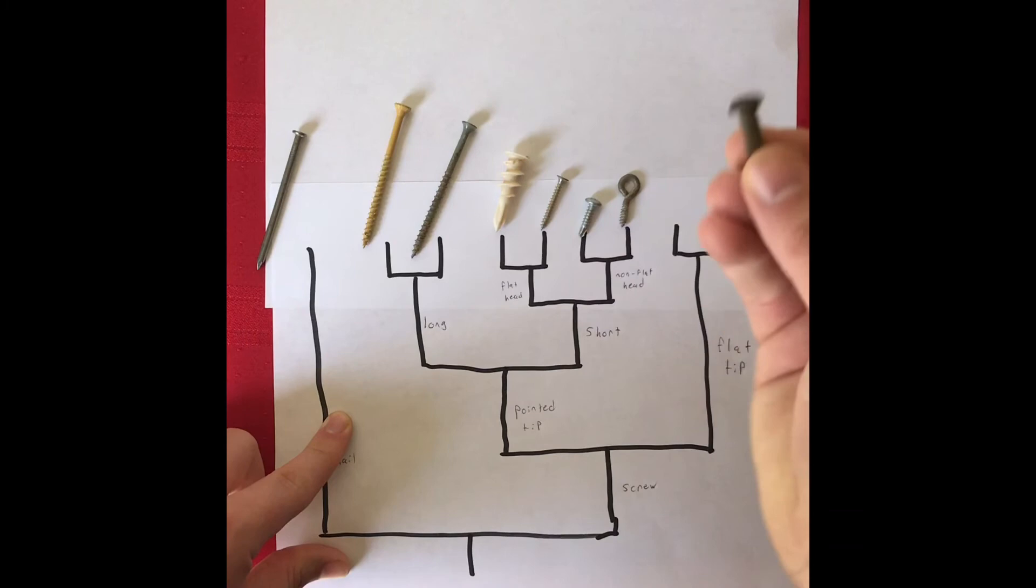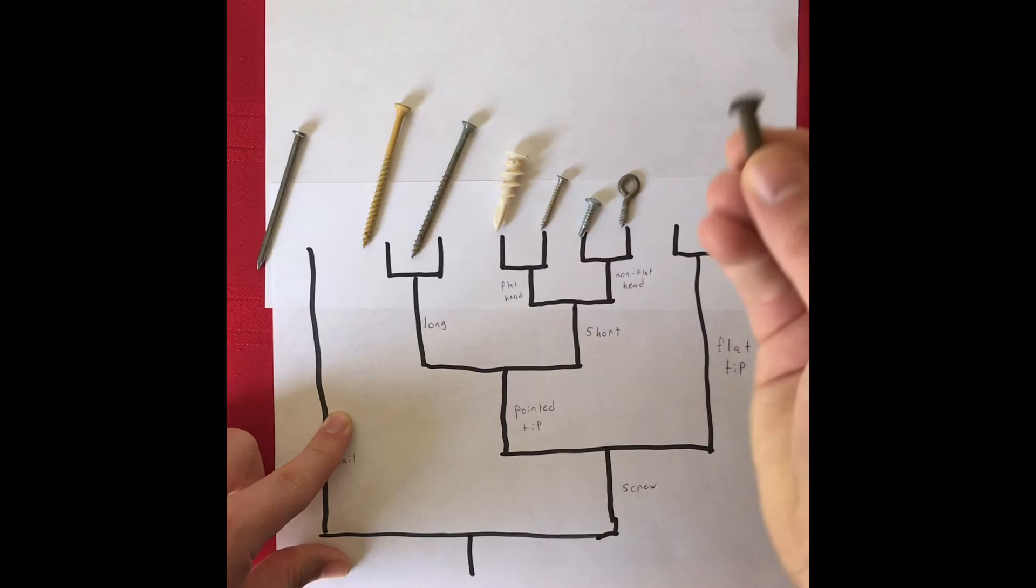However, we also see that non-flat head phenotype evolved separately in the flat tip screws. Both of these also have rounded heads. However, these non-flat head screws diverged earlier from the flat tip because they had the pointed tip.